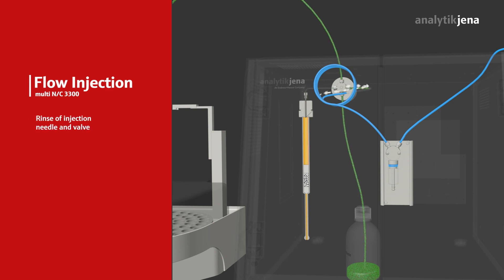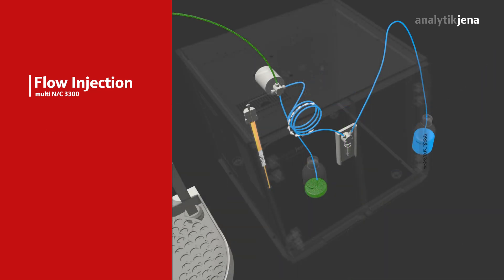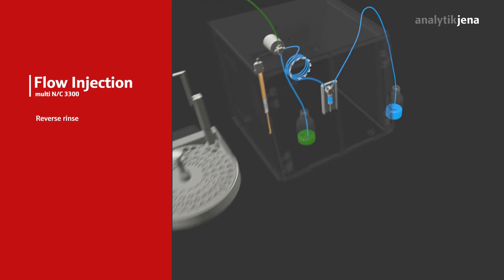The injection needle and valve are effectively rinsed. This is followed by the reverse rinse of the sample aspiration tube and needle into the auto-sampler rinse station for full carryover control.